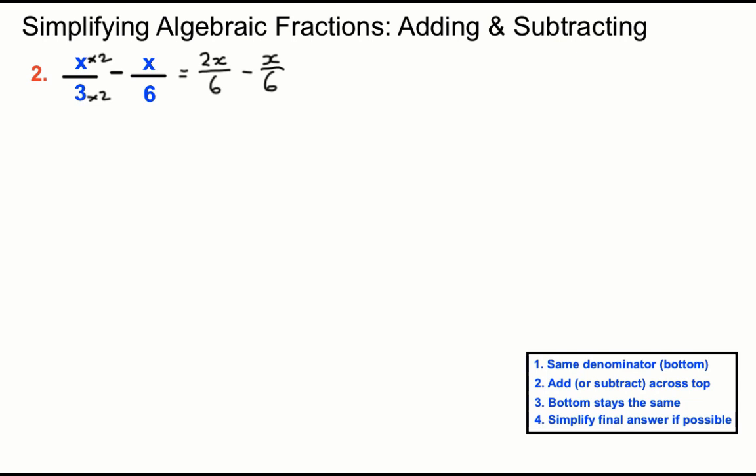Then we'll subtract this time across the top because there's a minus in between these two. We'll remember that x is actually 1x, that helps our brain a little bit. 2x minus 1x leaves us with 1x or just x and the bottom stays the same. x over 6 is our answer there. So step one is to turn them so they've got the same bottom and then subtract across the top, keep the bottoms the same.